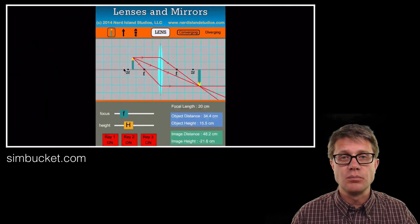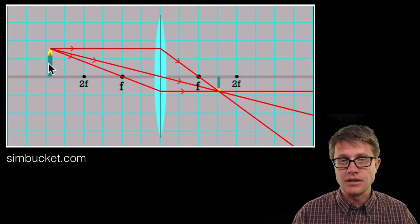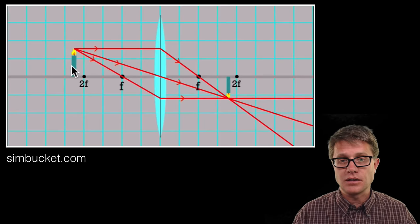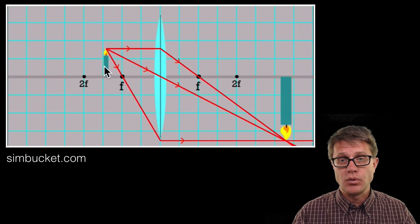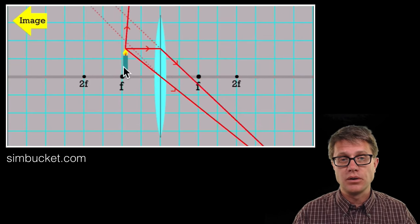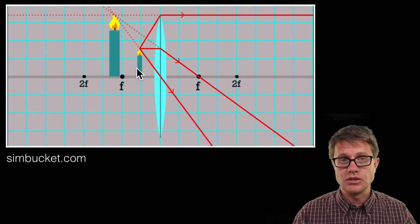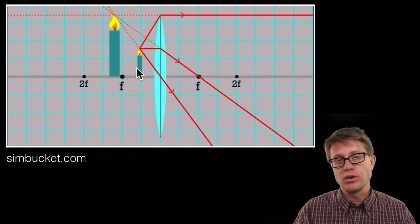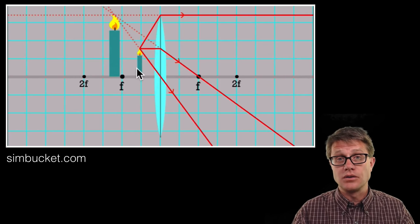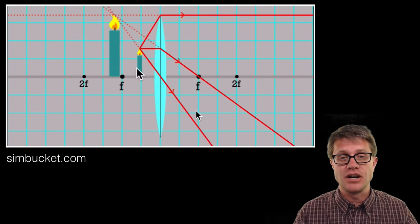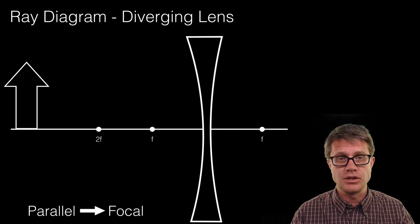Now let's test this using a Simbucket simulation, where we can drag the object on the left side. You can see that as we drag the object, the image is real and on the right side. But watch what happens as we approach the focal length — now the image moves to the left side and becomes a virtual image, which you can see through the dotted lines. We can even measure the distances to figure out exactly where that image is going to be.